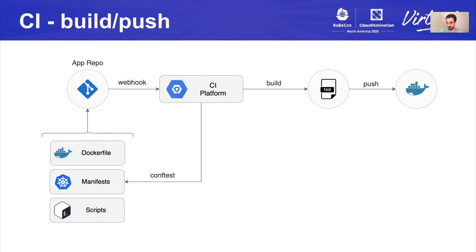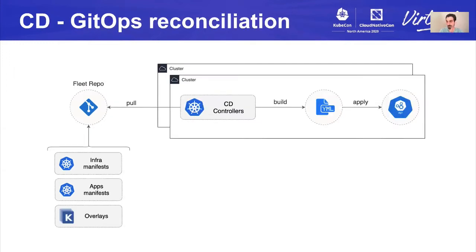The CI platform doesn't know about your production clusters and doesn't connect to Kubernetes that way. For the continuous delivery part, the proposal is to use GitOps. GitOps means you will have a repository where you define your whole fleet state. The continuous delivery controllers will not be running outside the cluster — they will be running on each cluster. This is how the clusters themselves reconcile their own state. They connect to your fleet repository and take a customized overlay made for that particular cluster or group of clusters, like staging and production, and continuously reconcile their state with what's defined in Git. That means you can version your infrastructure along with your app deployments.